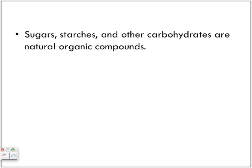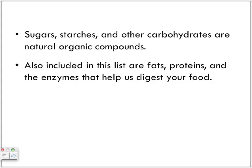Sugar, starches, and other carbohydrates are natural organic compounds. Also included in this list are fats, proteins, and the enzymes that help us digest our foods — these are also formed from organic compounds. These organic compounds contain carbons and hydrogens. Carbohydrates like sugars consist of C6H12O6 — carbons and hydrogens.